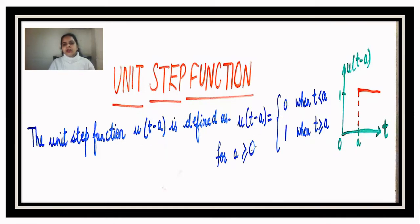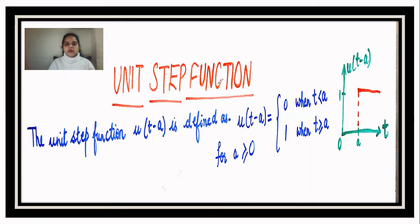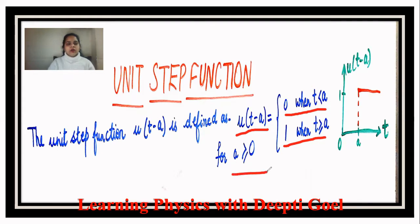So the unit step function is defined as u(t - a), which equals zero when t is less than a, and one when t is greater than or equal to a. The value of a is always positive. The function is called the unit step function because u stands for the unit value, and at the point a it takes a step of one.